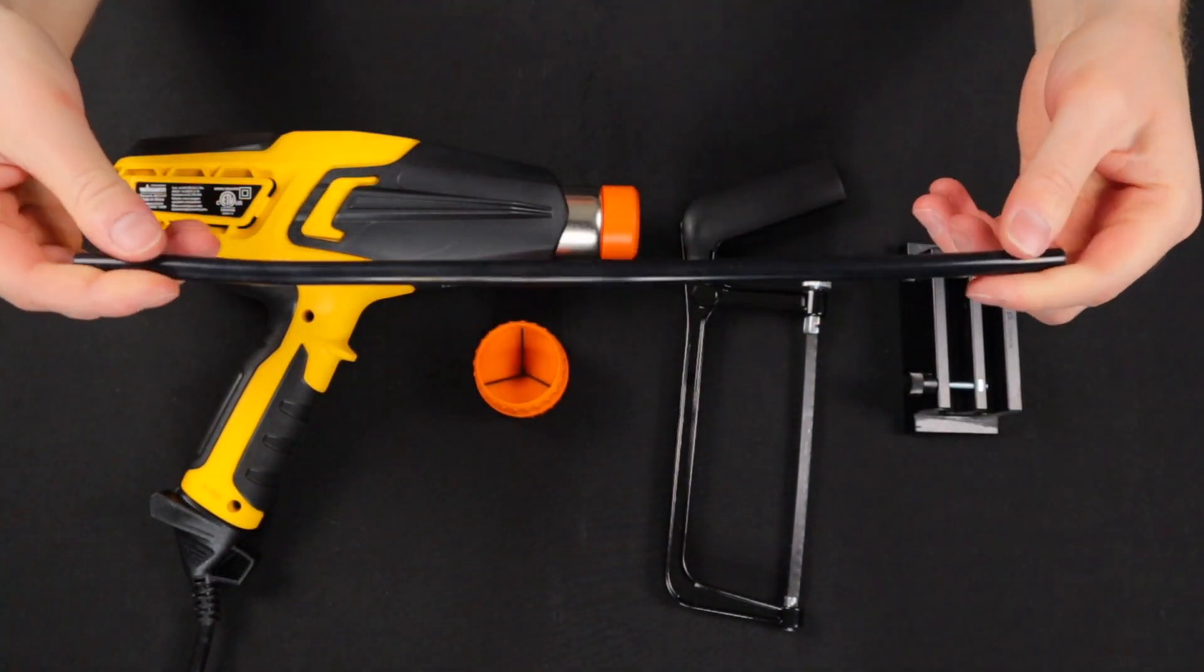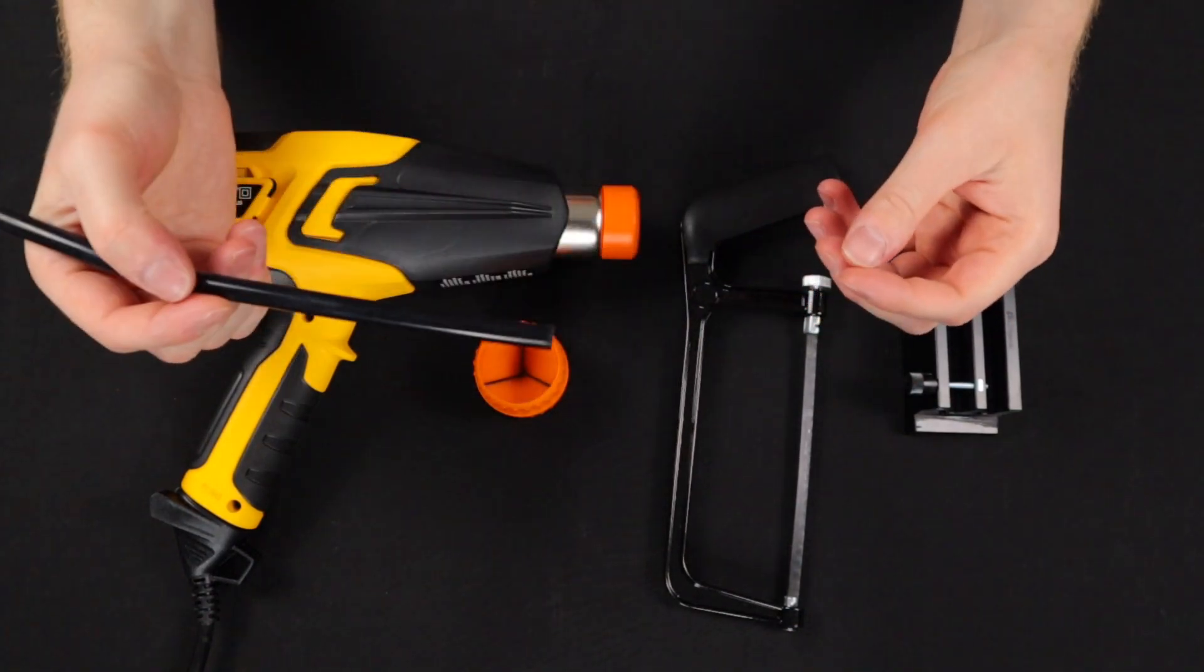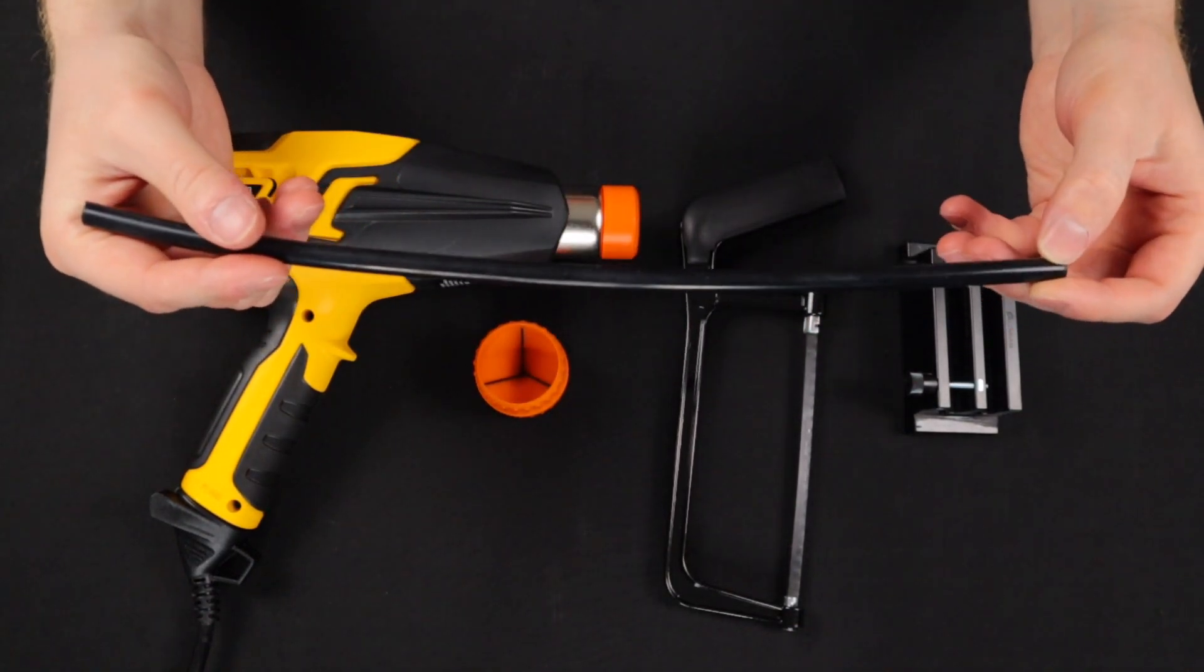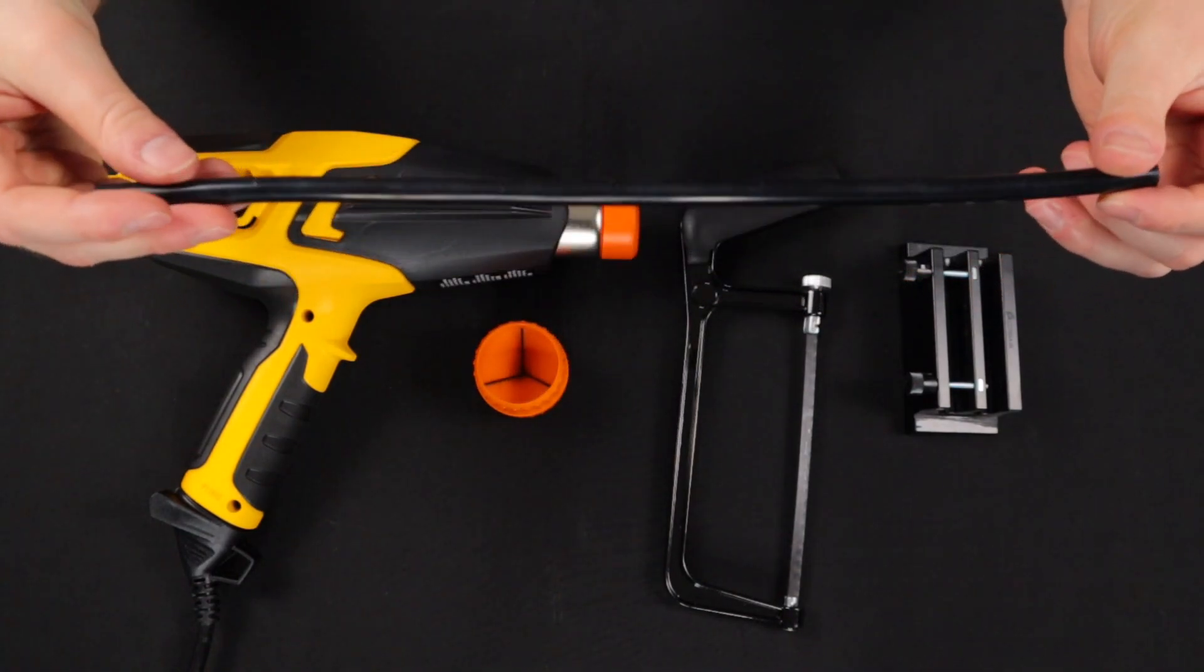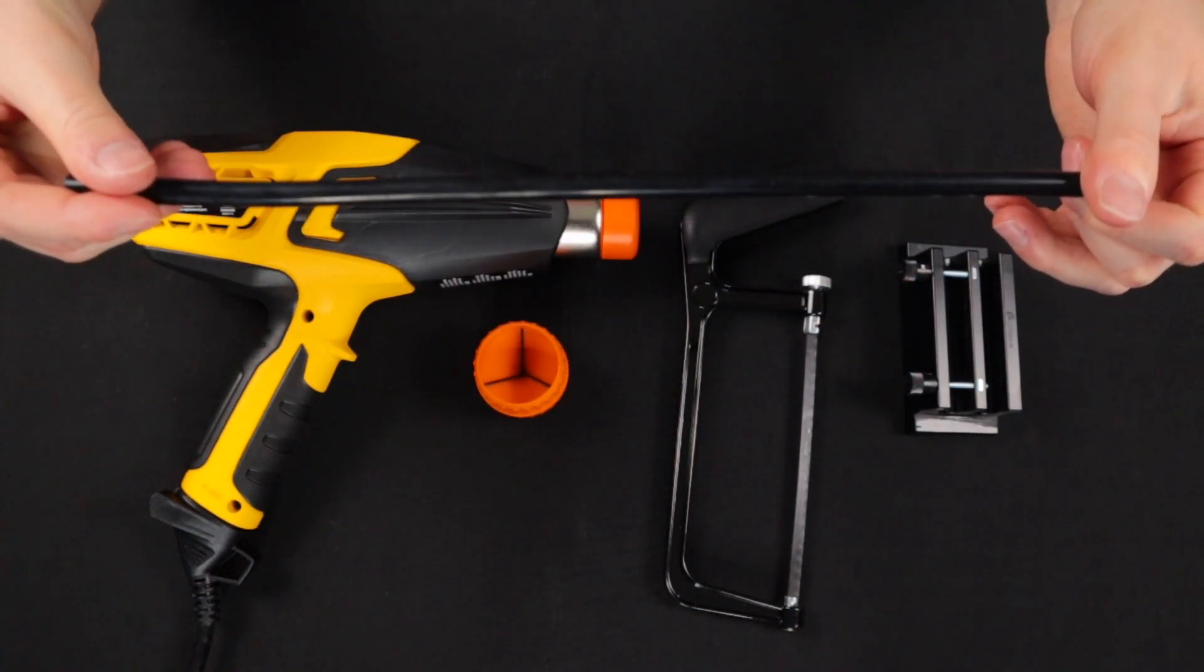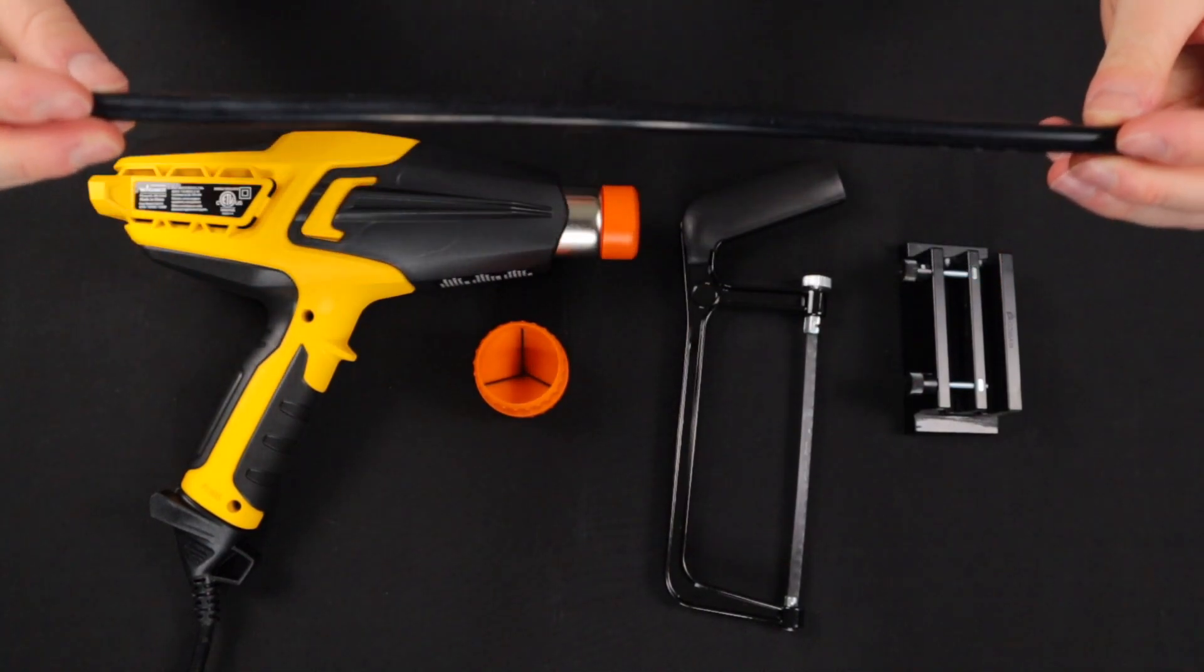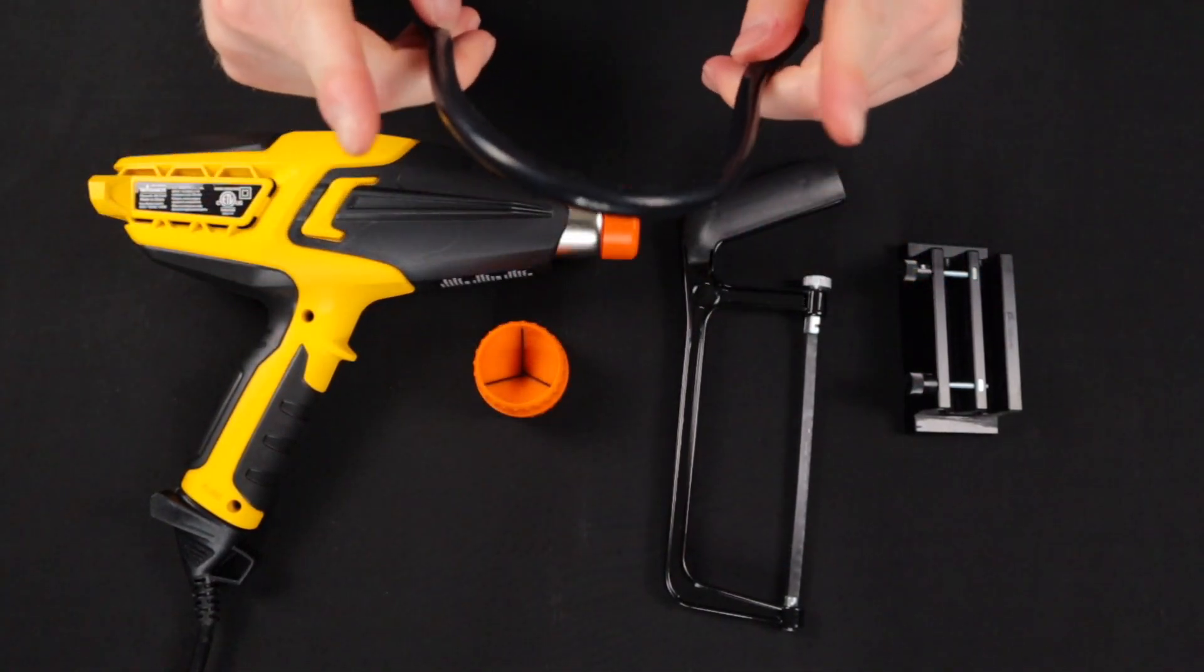Next we have a silicone core that you're going to use to slide inside of the tubing so that you can keep the tubing's shape as you heat it. This is an absolute necessary part of any tube bend so do not bend tubes without this.